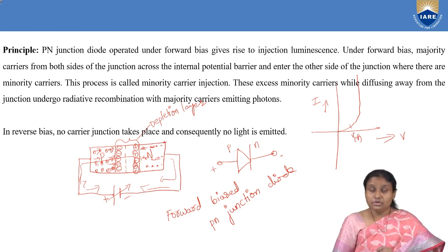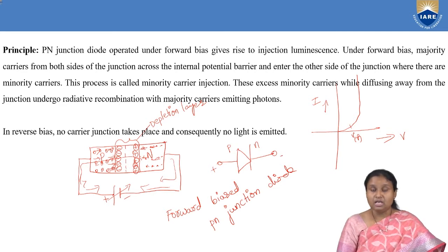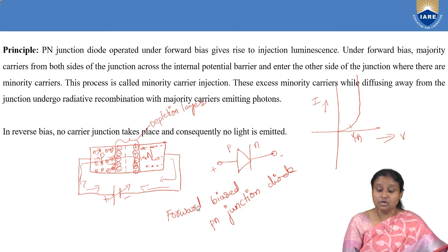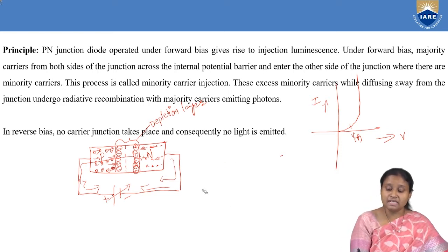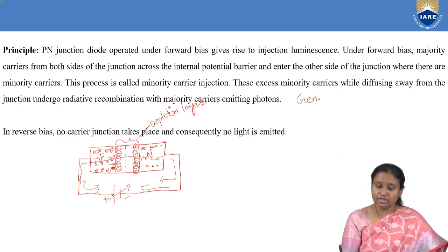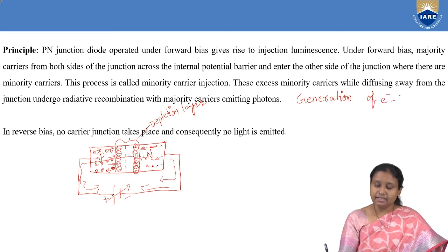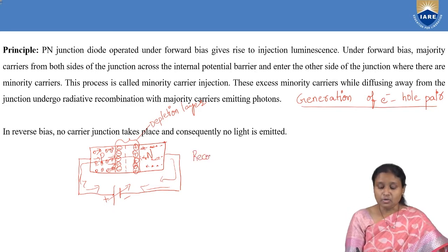When we talk about this light emitting diode and forward biasing of PN junction, there is one important phenomenon taking place during forward biasing of the diode, and that phenomenon is called recombination of electron-hole pair. There are two processes associated with semiconductors: first is generation of electron-hole pair, and the second is recombination of electron-hole pair.